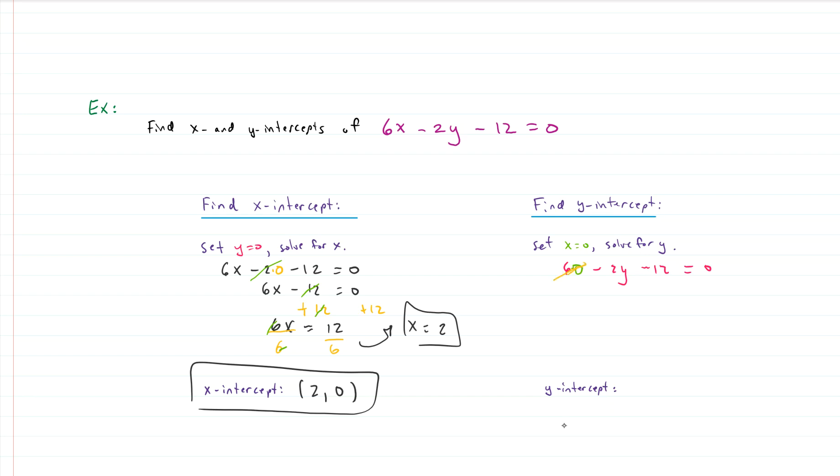And we're setting x equal to zero. So we're going to have 6 times zero, and again, lucky for us, 6 times zero is just zero. That goes away completely. And we have negative 2y minus 12 equals zero. And we solve for y. So we can do this by taking the negative 12 to the other side. So we add 12 to both sides. The negative 12 cancels on the left. Negative 2y equals positive 12. We can divide by negative 2, and we get y equals 12 over negative 2, which is negative 6. So our y-intercept is 0, negative 6.